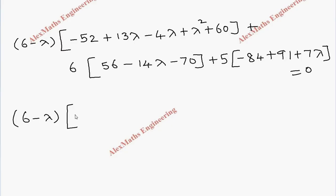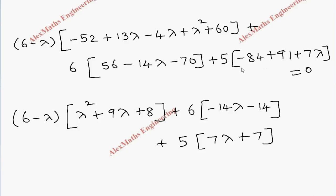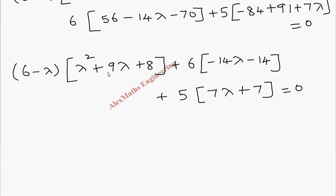The first term 6 minus lambda is written as it is. First we write the lambda squared term, then combining lambda terms we get 9 lambda, then the constants: 60 minus 52 plus 8. Then plus 6 into the lambda term minus 14 lambda, then 56 minus 70 which is minus 14. Then plus 5 into 7 lambda, and it is plus 7, that is 91 minus 84, which is equal to zero.